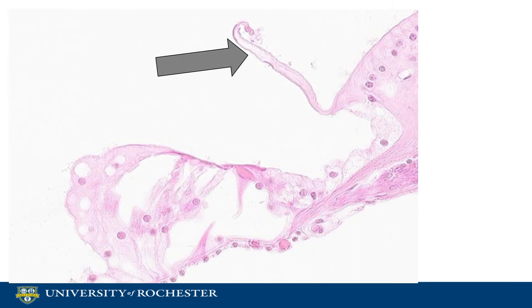This is the tectorial membrane. It is an acellular membrane, just like the basilar membrane, and is also part of the organ of Corti.